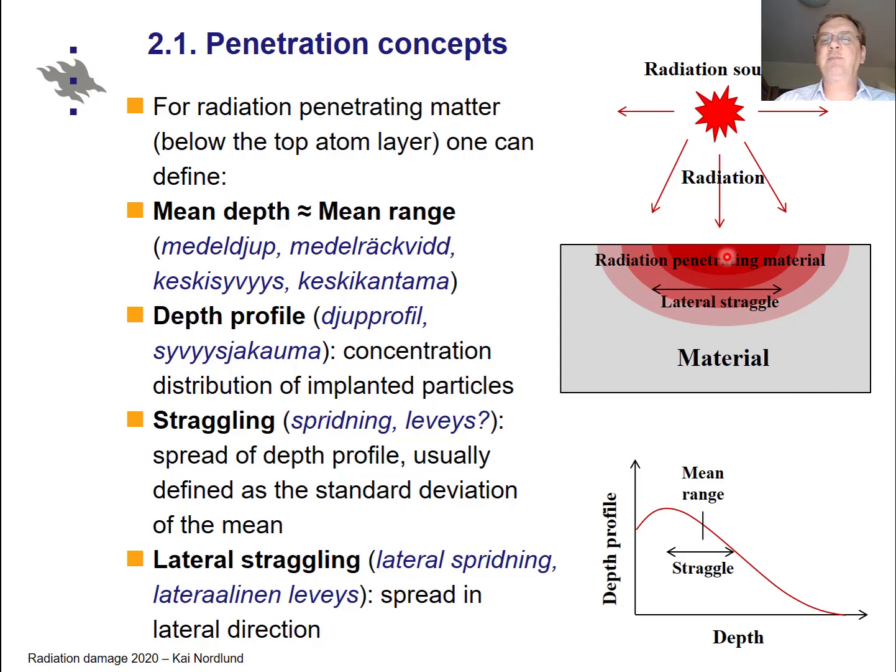And then there is another related quantity which is the lateral straggling, which means that if ions are penetrating only in a narrow region in the center, how wide are they spreading? Or in other words, if a single ion is spreading, what is the probability distribution of where they are spreading?